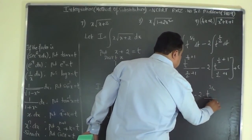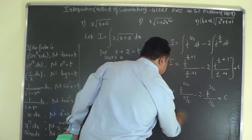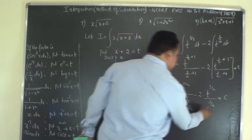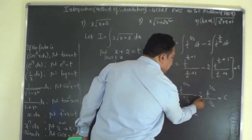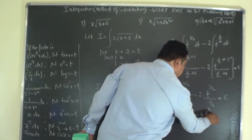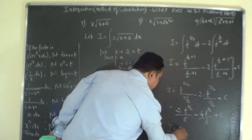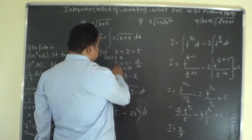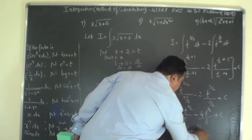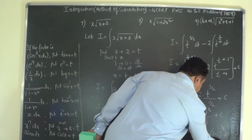Simplifying: 2 goes to the numerator giving (2/5)·t^(5/2), and 2 times 2 gives 4 in the numerator giving (4/3)·t^(3/2). Back-substituting t = x+2, the final answer is I equals (2/5)·(x+2)^(5/2) minus (4/3)·(x+2)^(3/2) plus C.